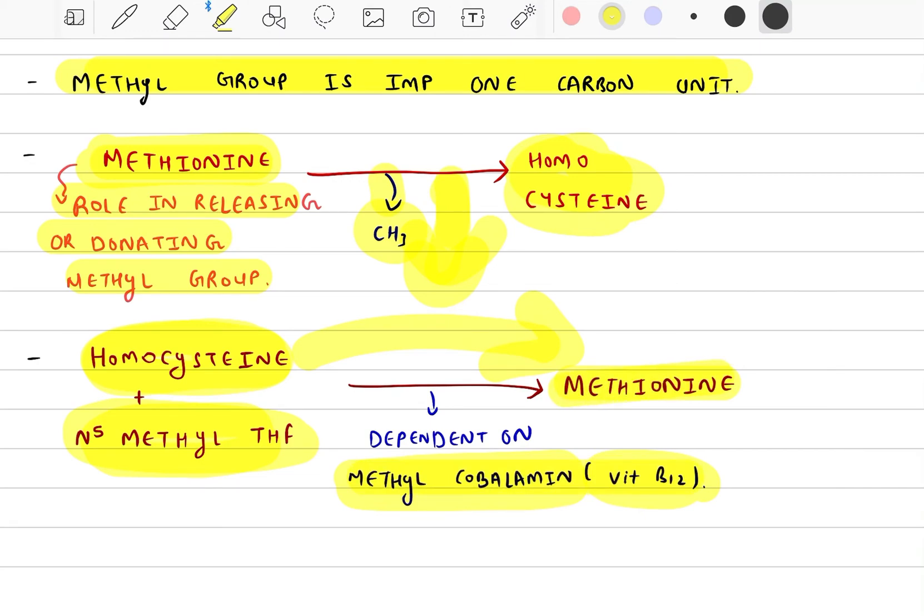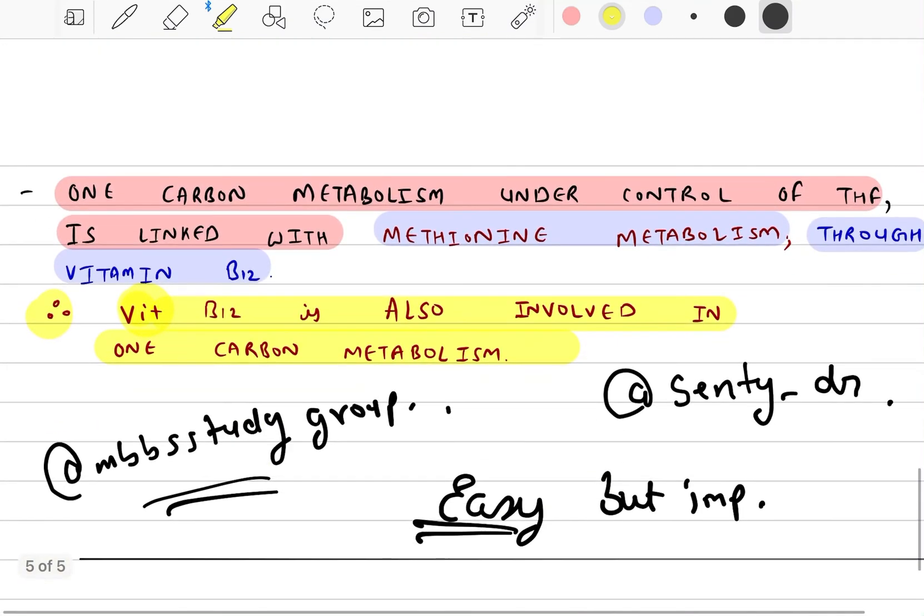These are interconvertible. One carbon metabolism under control of THF is linked with Methionine Metabolism through vitamin B12. That is why vitamin B12 is involved in one carbon metabolism and plays a very important role.